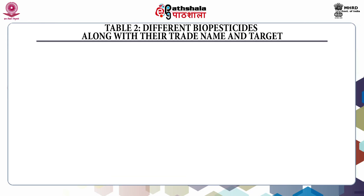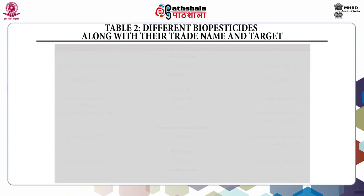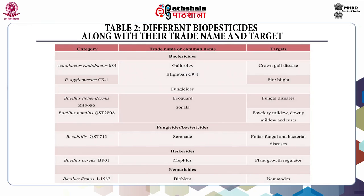Coming to the next part — different biopesticides along with their trade name and target. First is Azotobacter radiobacter K84, sold as Galltrol, to control crown gall disease. Second is Bacillus licheniformis strain SB3086, sold under the name Ecogard for fungal diseases.